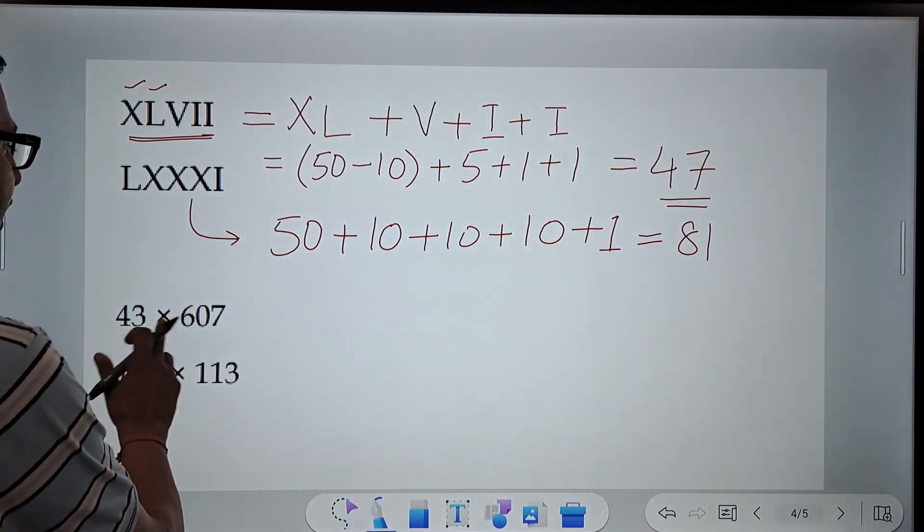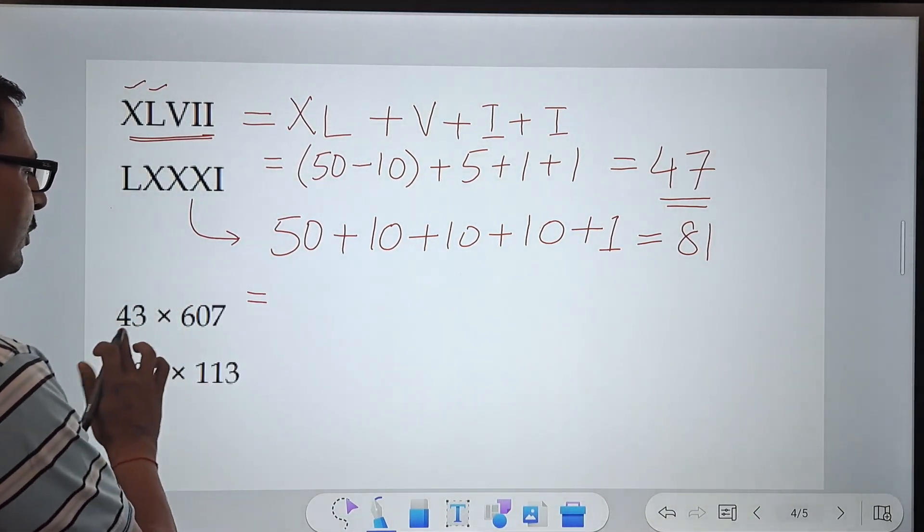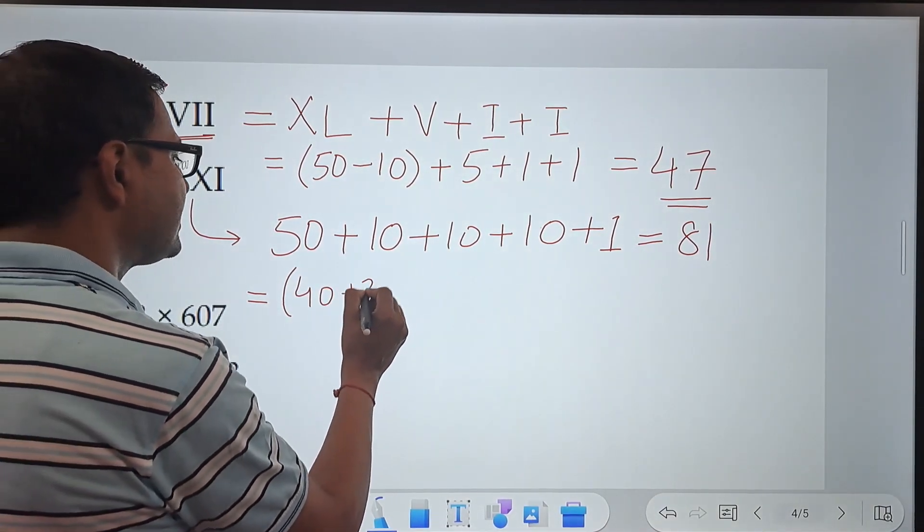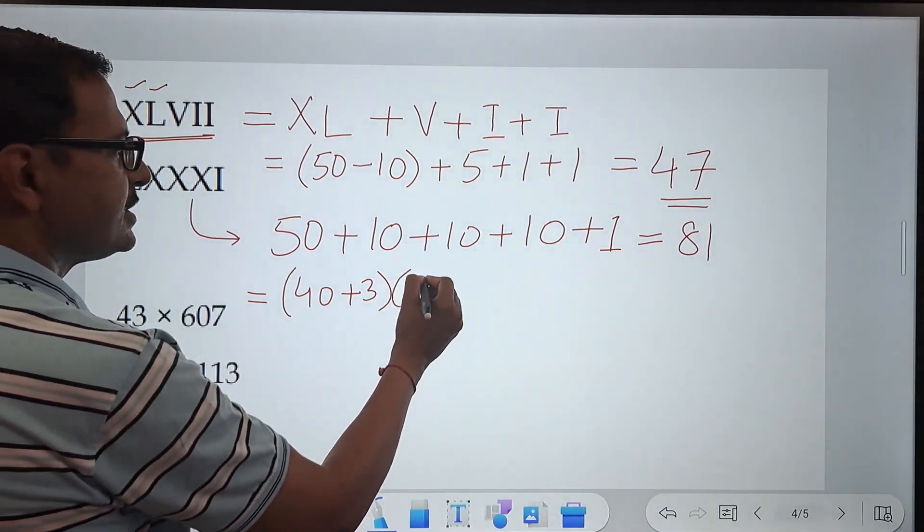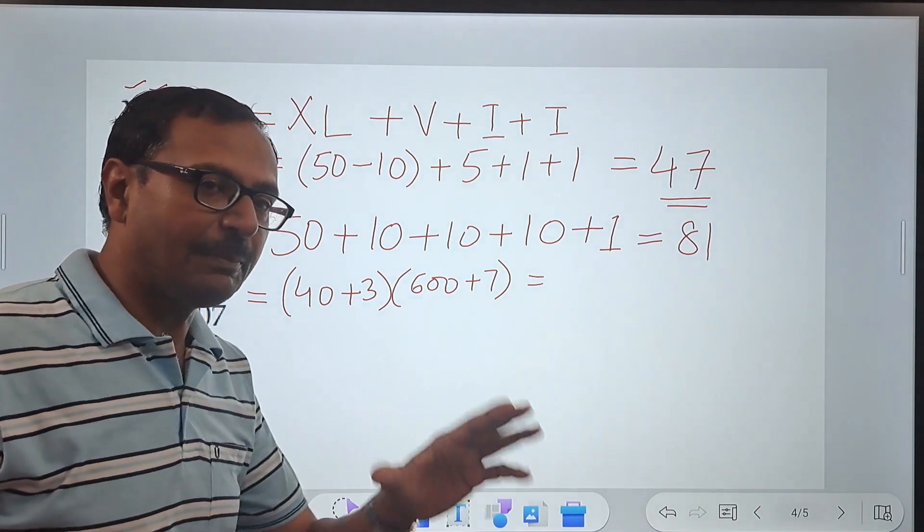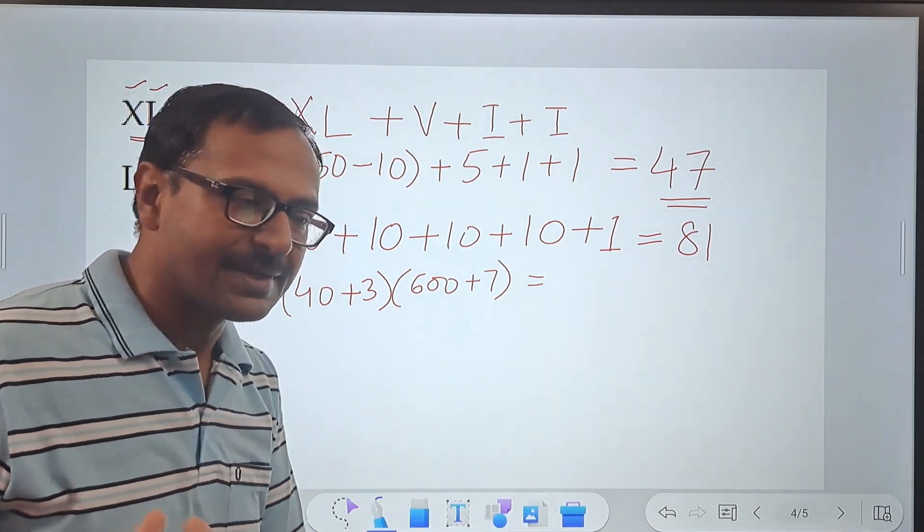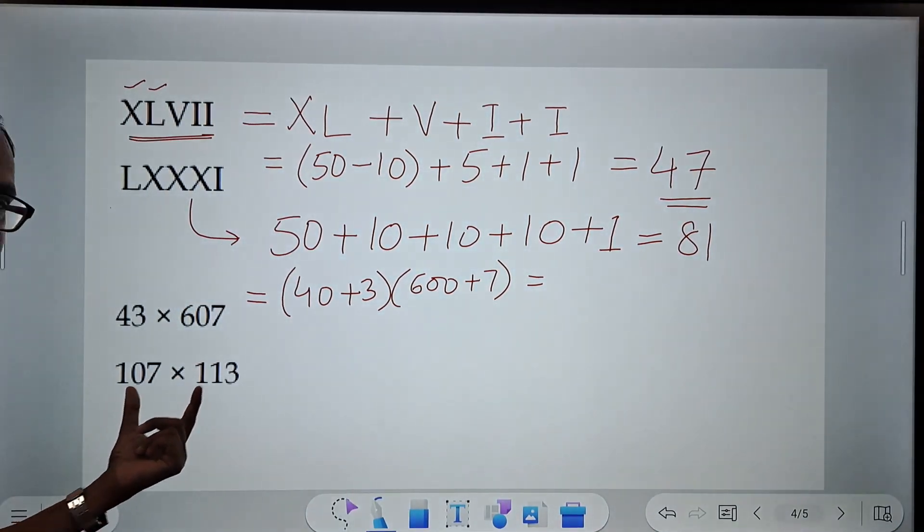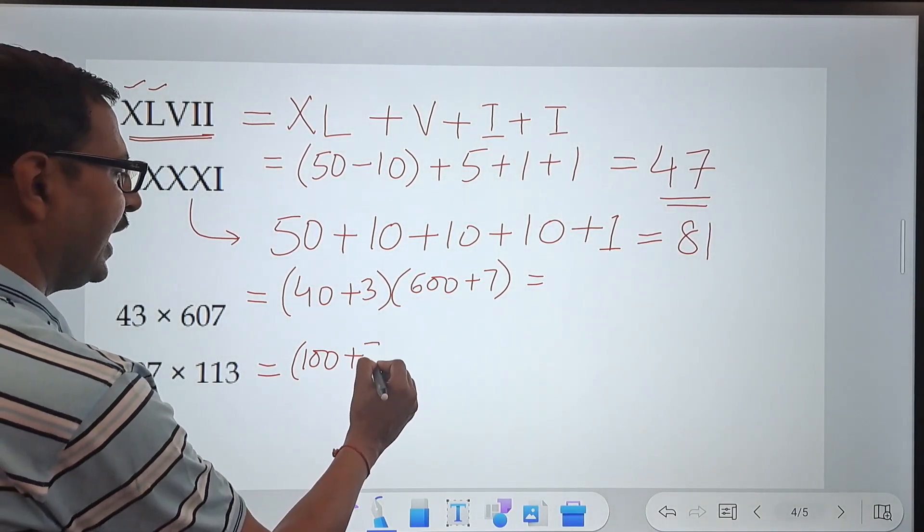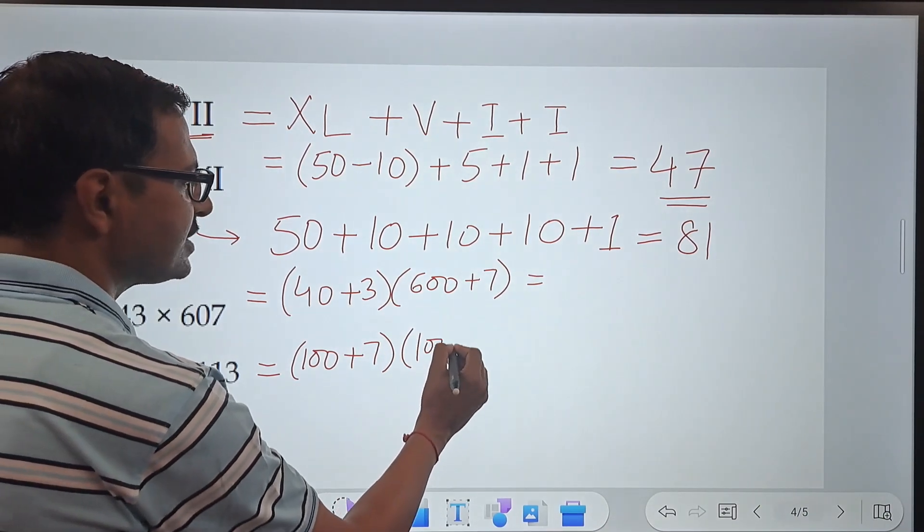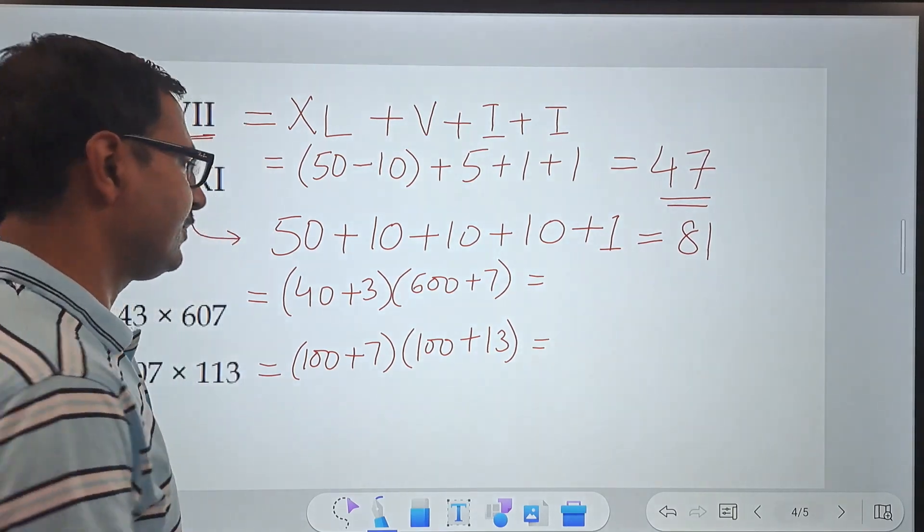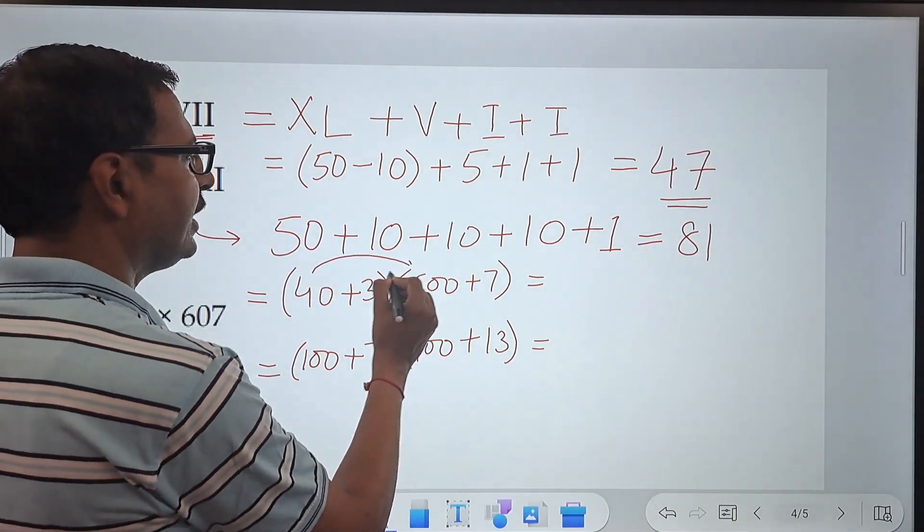Let's see the use of brackets. 43 and 607, I have to multiply these two numbers. So I'll write 43 as 40 plus 3 and 607 as 600 plus 7. Multiplication becomes easier when the numbers are very close to the base. Likewise, here you can see 107 and 113. You can write 107 as 100 plus 7 and 113 as 100 plus 13. And now, we can use the distributive property to get to our answer. If you multiply 40 by 600, you get 24,000.